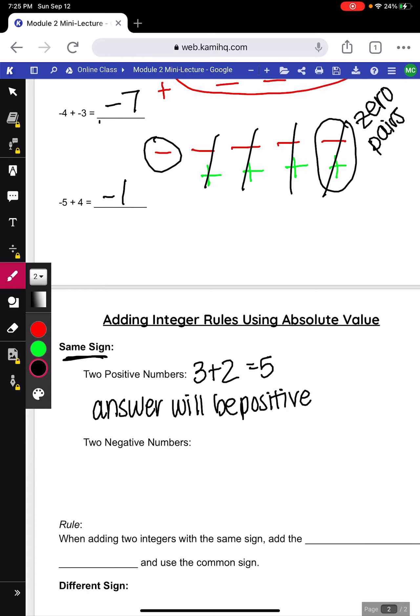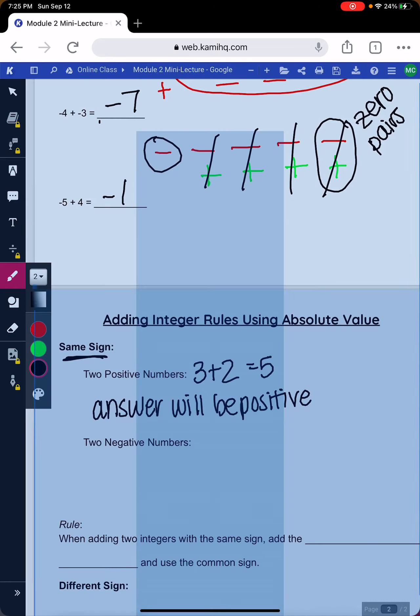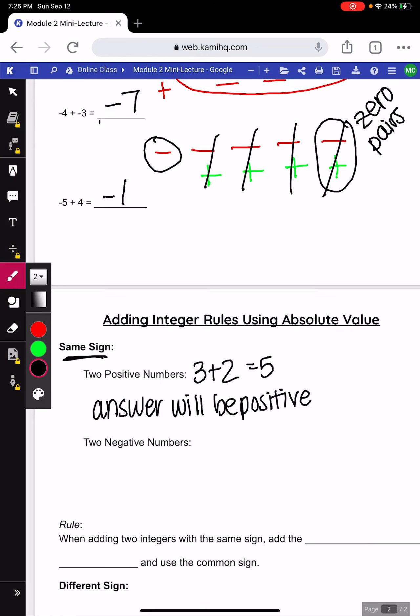Now, when we add two negative numbers, for example, above we knew that negative 4 plus negative 3 gave us a negative 7. Here, our answers will always be negative.